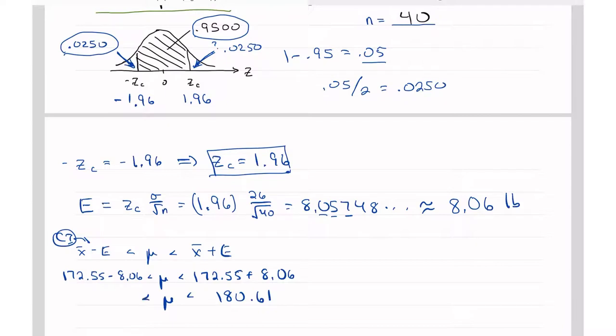And the smaller one, smaller value always goes on the left, larger value always goes on the right. So 172.55 minus 8.06 is 164.49.